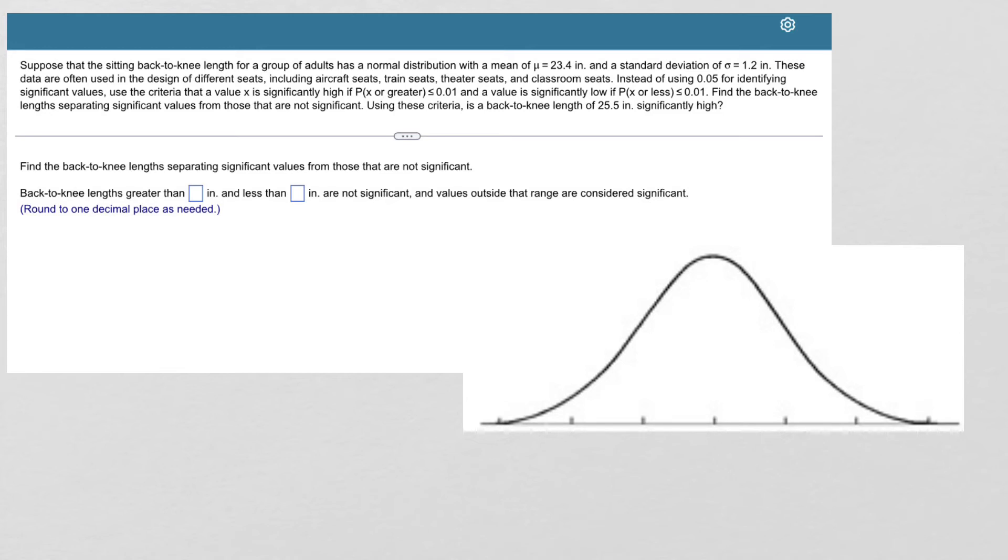And we want to find the separation between values that are significant and values that are not significant. So we want to know what range of values are significantly high, what range is significantly low, and we're using the criteria of the probability of those values being less than 1% rather than 5%. So we can set that criteria to whatever percentage is appropriate for that situation. So I've got my normal distribution here, and I know that the middle is the mean.